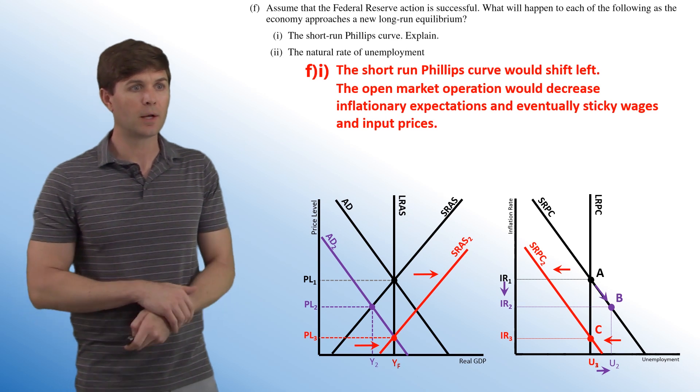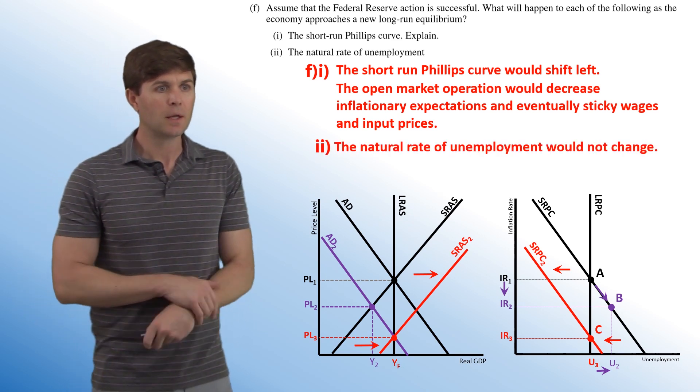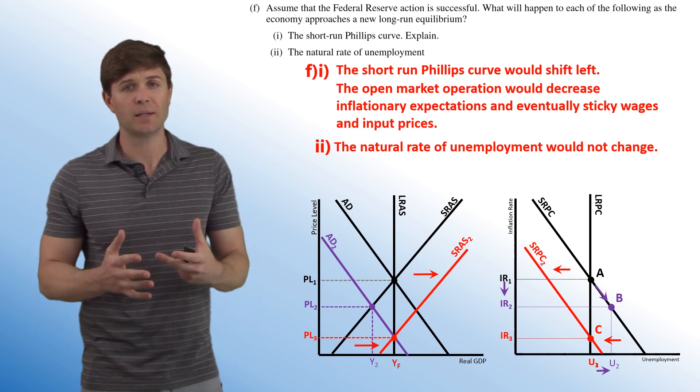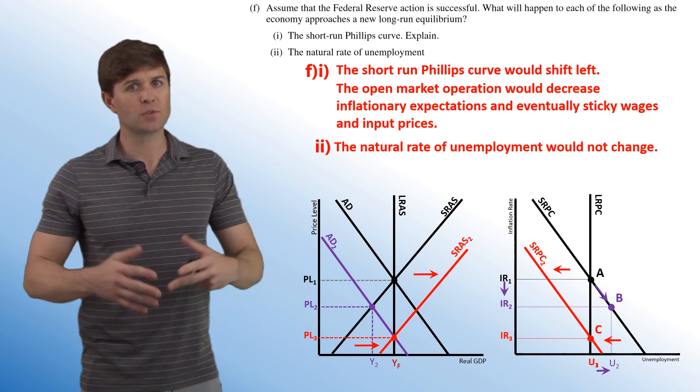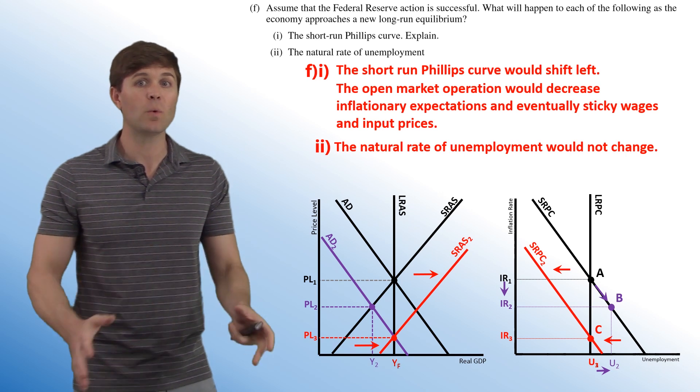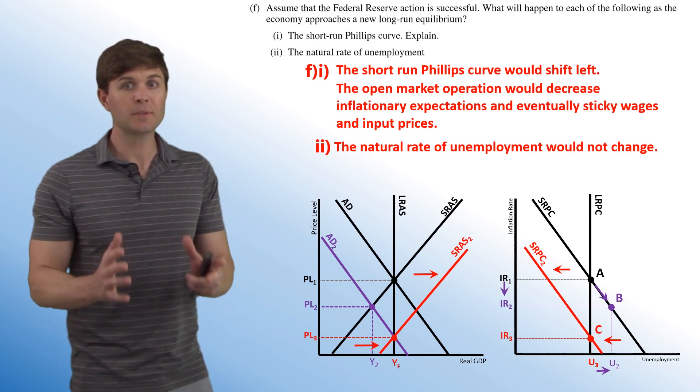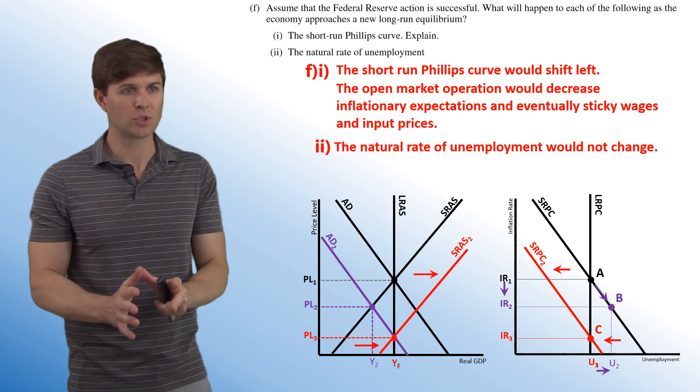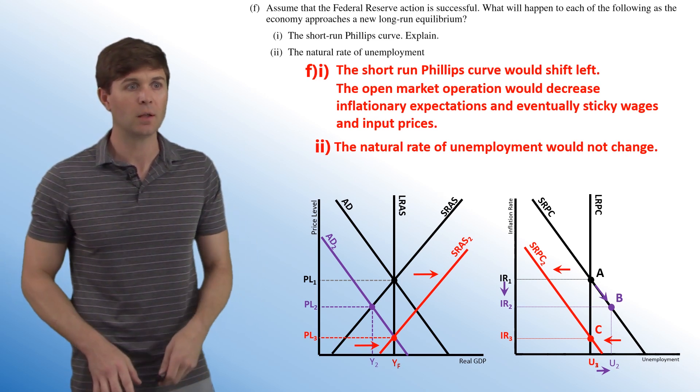Now part two, we have the natural rate of unemployment would not change. And this is an easy answer. Natural rate doesn't change. Currently 4% to 6%, it's not going anywhere. Unless they specifically state that the natural rate of unemployment has changed, that's the only thing that's going to actually change it. So in this case, it doesn't change at all. So that sums up this question. It is an in-depth one, but it's definitely one worth taking your time and working your way through.